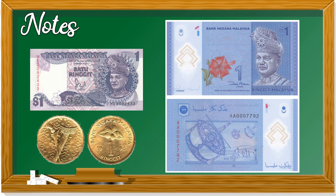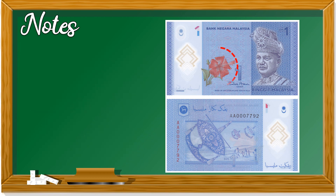This is the new one ringgit note. What can you see on the notes? What color is it? It's blue, right? In front of the note, you can see a hibiscus - bunga raya.